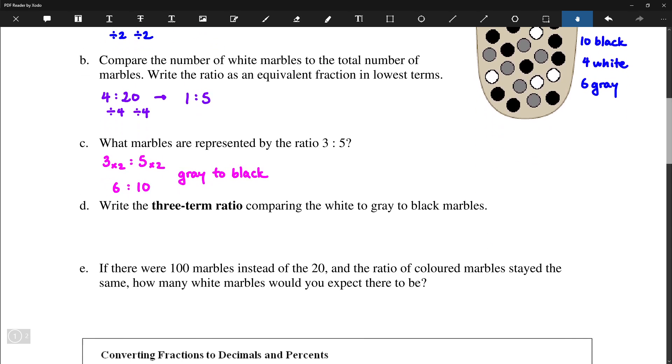Next up we are going to write a three-term ratio. So here we have 4 white marbles to 6 gray to 10 black marbles. And that can also be simplified by dividing each term by 2. So we actually have 2, 3, and 5.